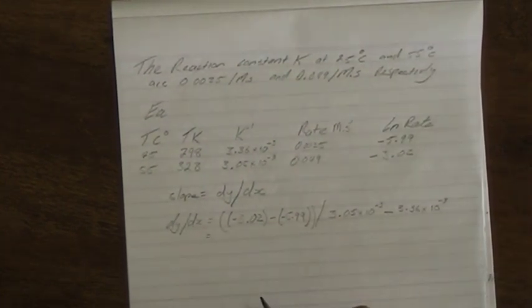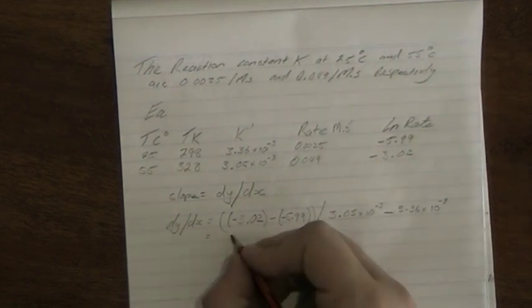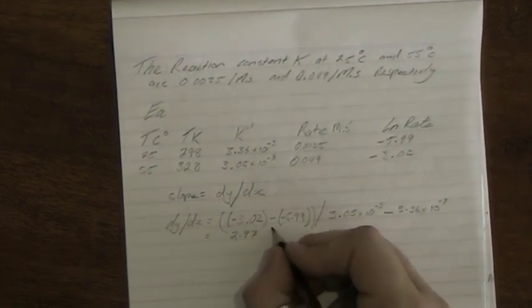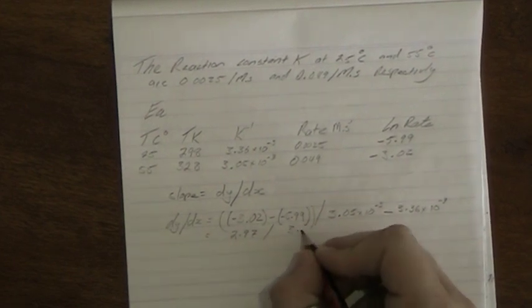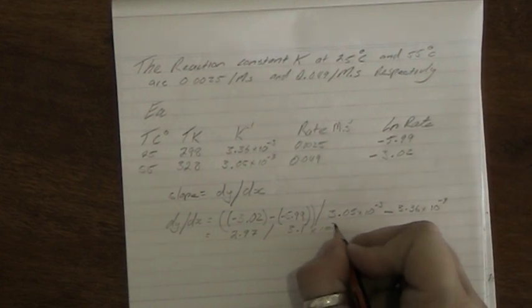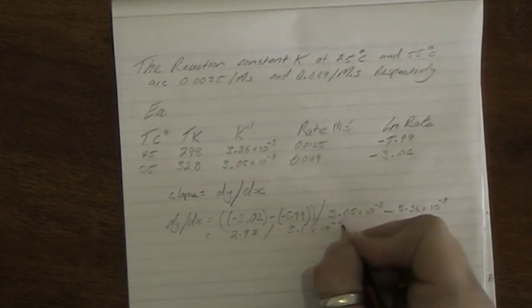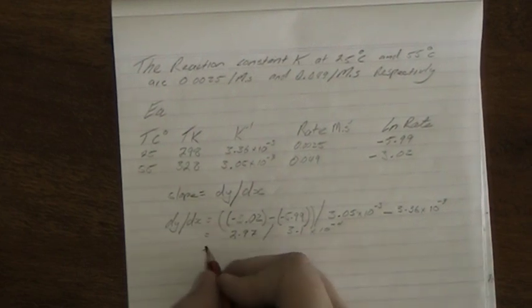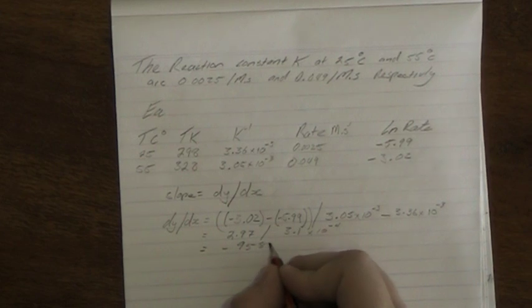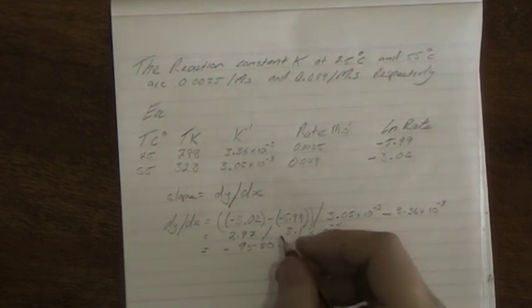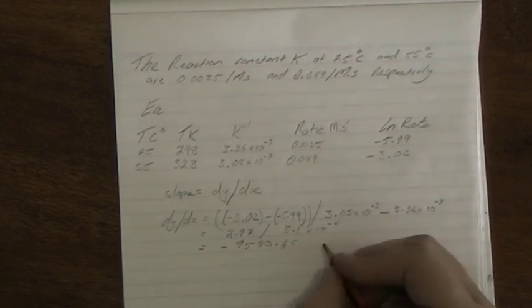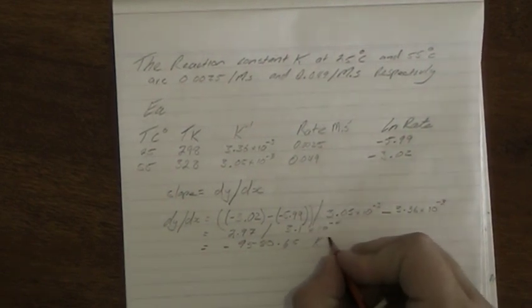That equals 2.97 divided by 3.1 times 10 to the power of negative 4. Dividing that we get negative 9580.65. This has a unit of K negative 1.